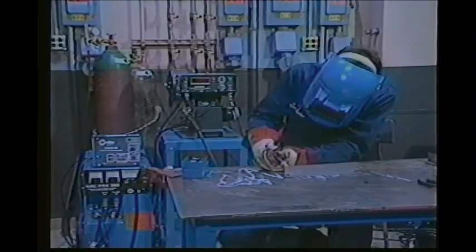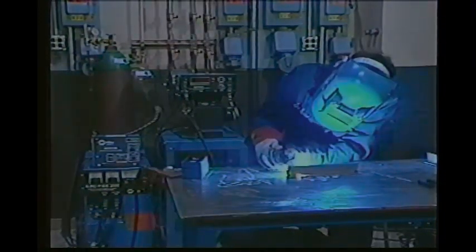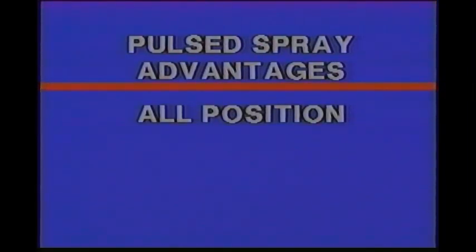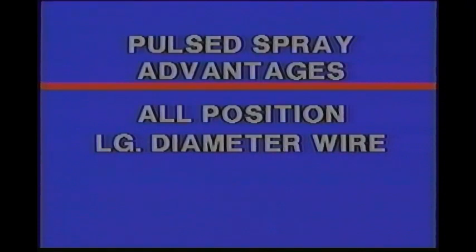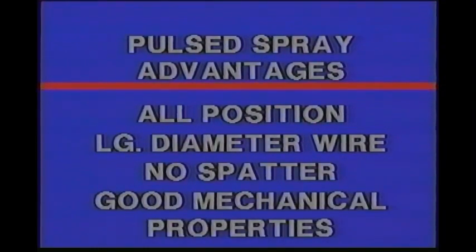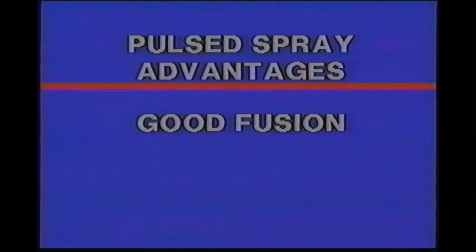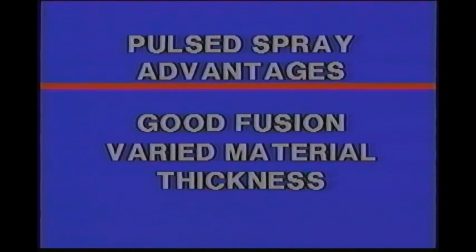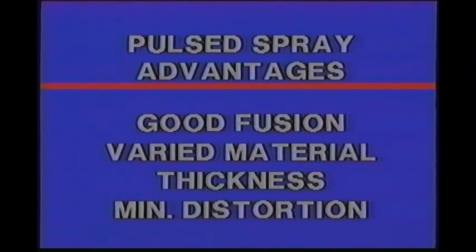The wire feeder and gun are the same as used in other gas metal arc applications. Some of the pulsed spray advantages are: all-position welding with spray-like transfer; use of large diameter wires such as 1/16th ER 4043 aluminum; no problems with spatter; good mechanical properties for various metals; good fusion that avoids cold lap problems; and varied material thickness from 20 gauge up to an inch and a half and thicker.